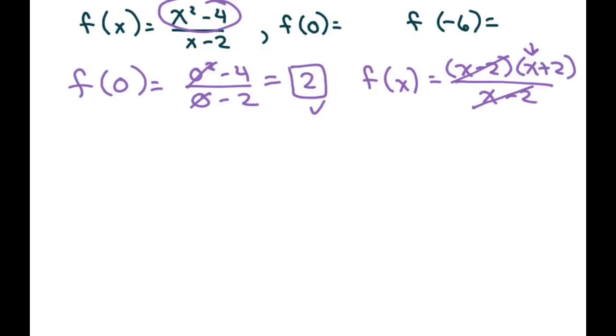So for the second one, I mean this f of negative 6, I'm going to go ahead and use my simplified f of x, which is f of x equals x plus 2. It makes it a lot easier, and I'm just going to put in for the x, I'm going to substitute with negative 6. So negative 6 plus 2 is negative 4.